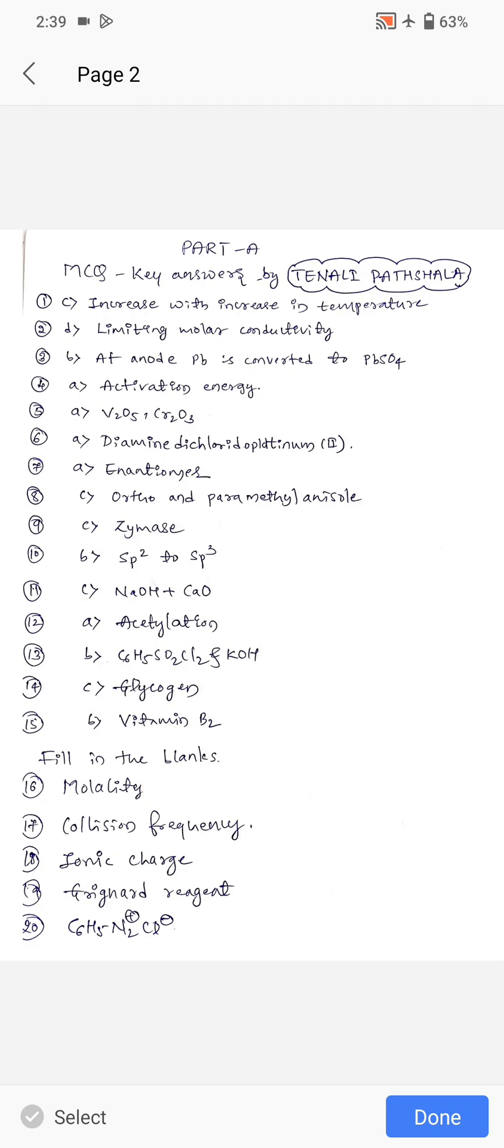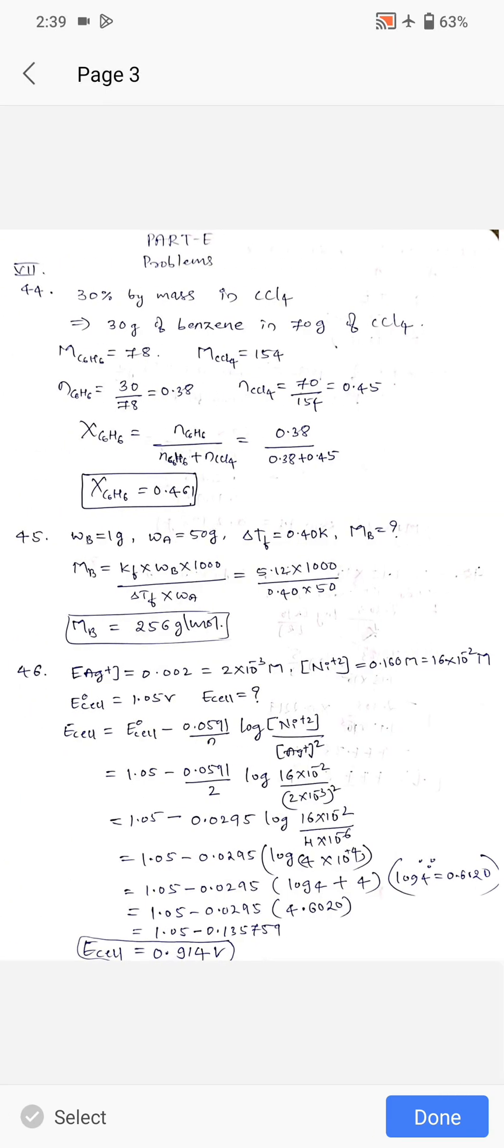These are the answers for the MCQ. Without wasting time, let us move to the problematic part. First problem: mole fraction of benzene, 30% by mass in carbon tetrachloride. 30% of benzene means 30 gram of benzene in 70 gram of carbon tetrachloride. Molecular weight of benzene is 78, molecular weight of carbon tetrachloride is 154. Calculate the number of moles: weight divided by molecular weight. Mole fraction of benzene equals number of moles of benzene divided by total moles. Finally, you will get 0.461.